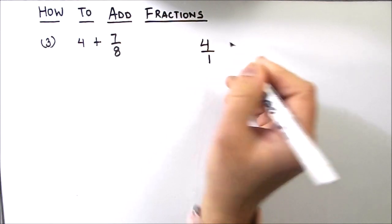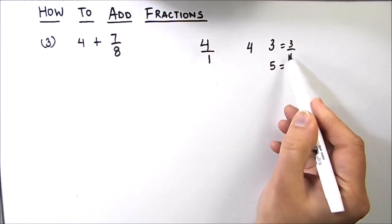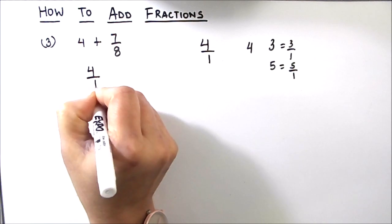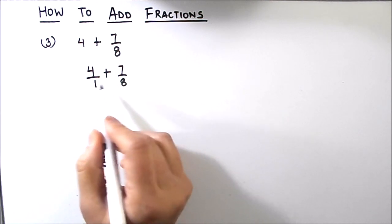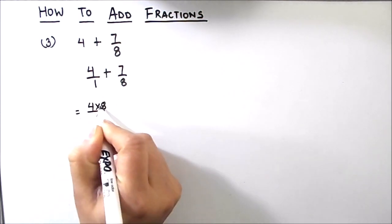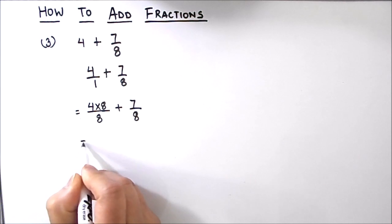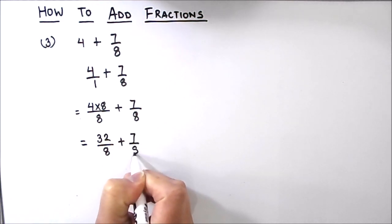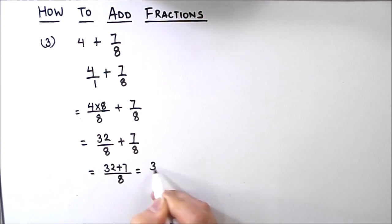Since 5 equals 5 by 1, all whole numbers have a denominator of 1. So we write 4 as 4 by 1, and now we have two fractions to add. The LCM of 1 and 8 is 8, so we multiply the numerator of 4 by 1 by 8, giving 32 by 8. The second fraction remains 7 by 8. So we get 32 by 8 plus 7 by 8, which equals 32 plus 7 divided by 8, giving 39 by 8.